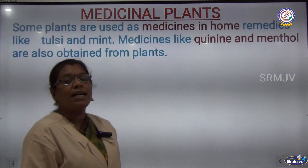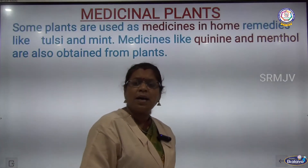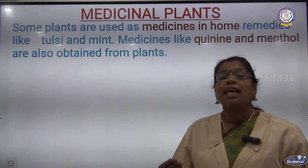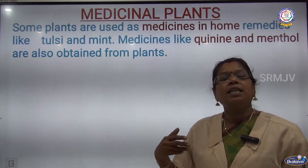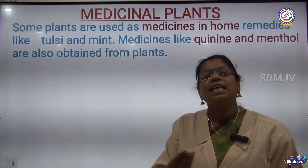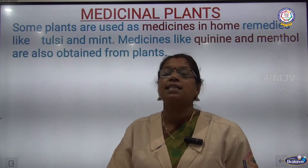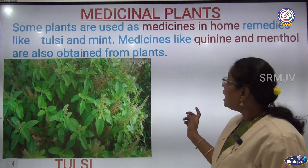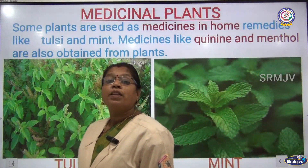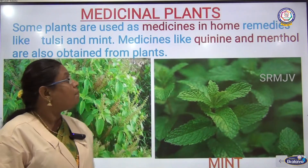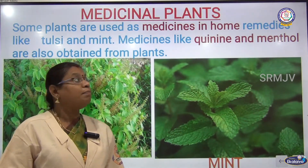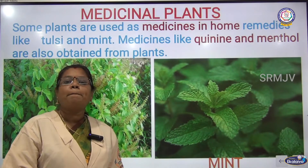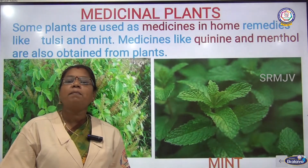Next are medicinal plants. We get home remedies from plants like tulsi and mint, which grow near our house and are used as medicines. Even quinine and menthol are obtained from plants.